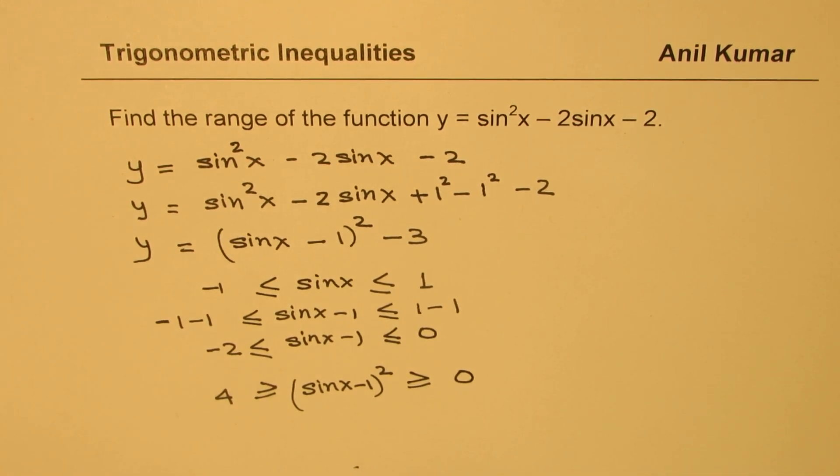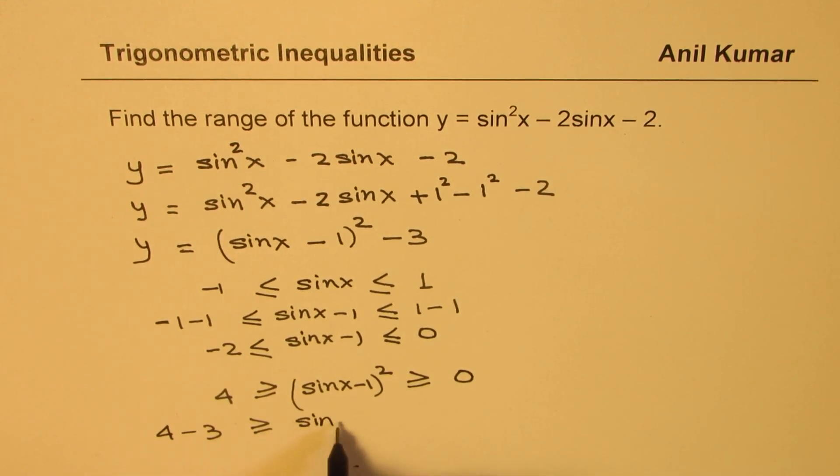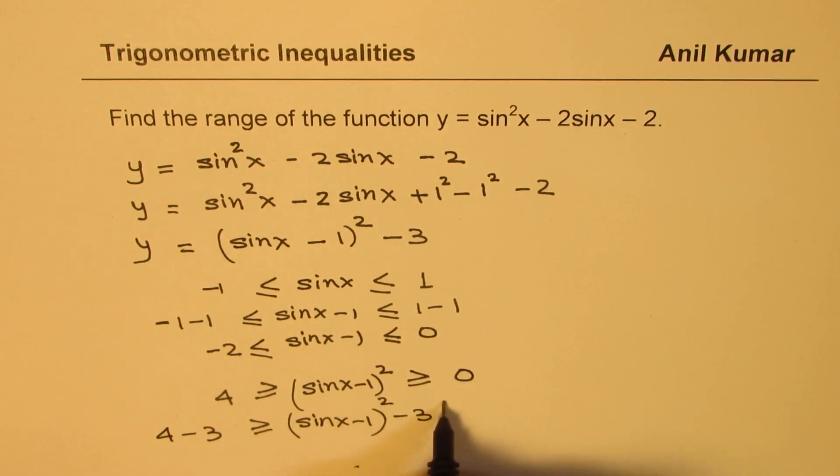So when you are squaring, things change a bit. You may have to use some common sense at this particular stage. And now we have to take away minus 3. So we get 4 minus 3 is greater than or equal to sine x minus 1 whole square minus 3, and that should be greater than or equal to 0 minus 3.